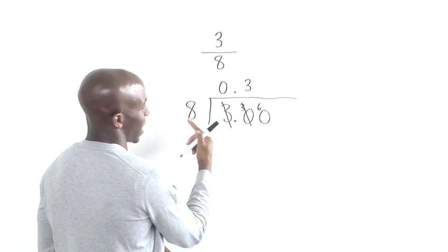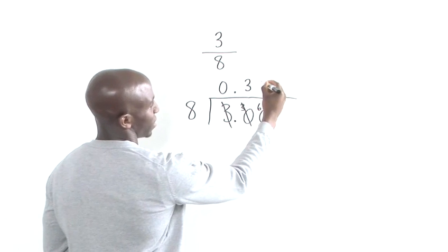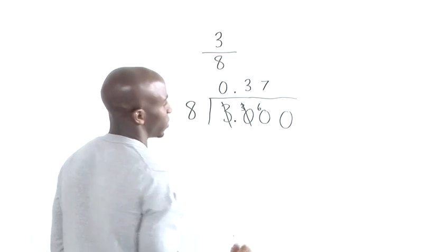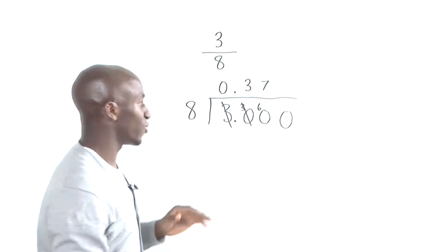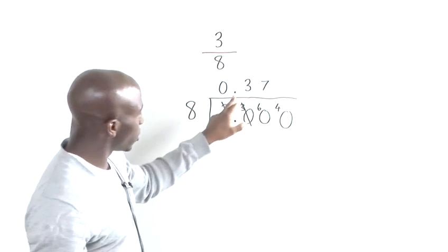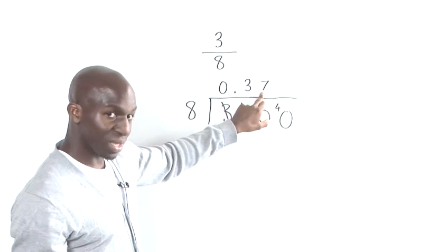So, 8 goes into 60 7 times. So, we put the 7 there and another 0 we would just say if it goes up to 56 then we've got a remainder of 4. Now, you can already see we've got 0.37.